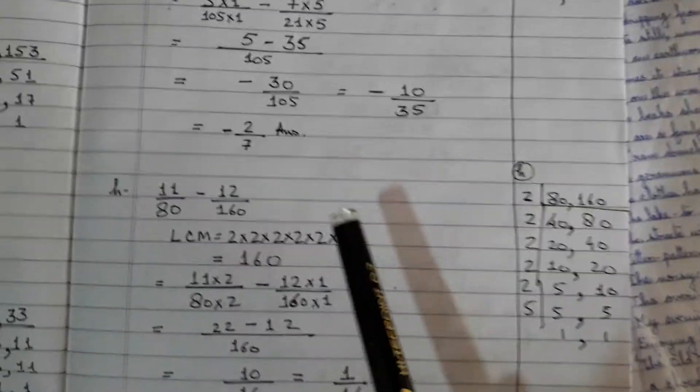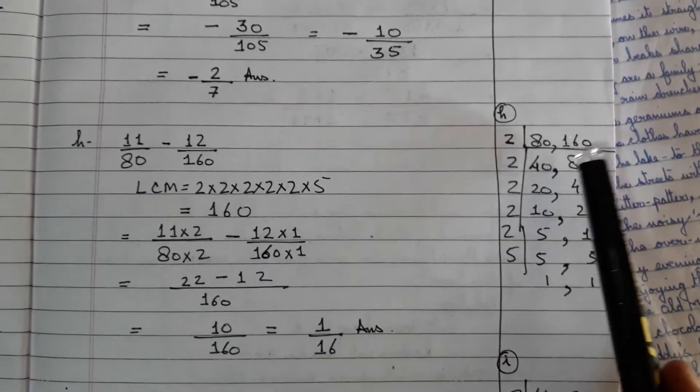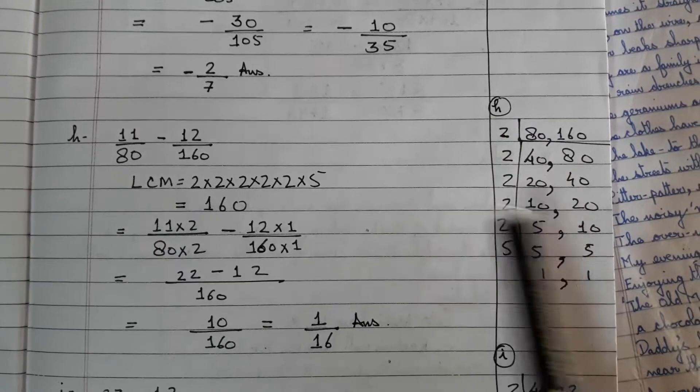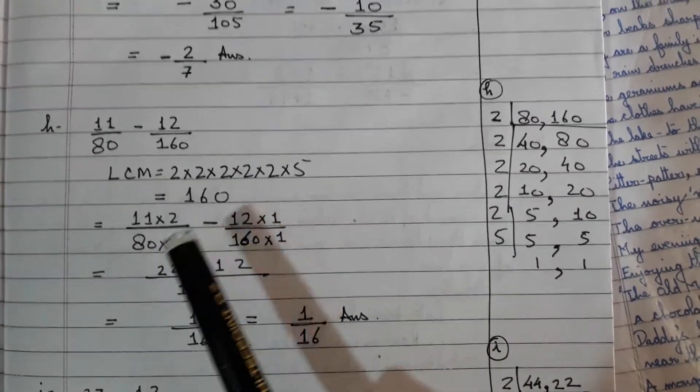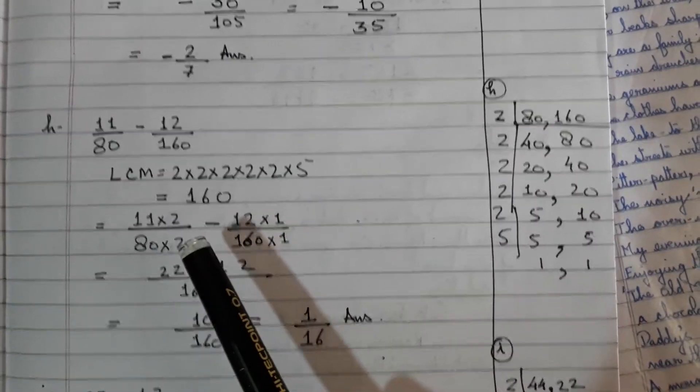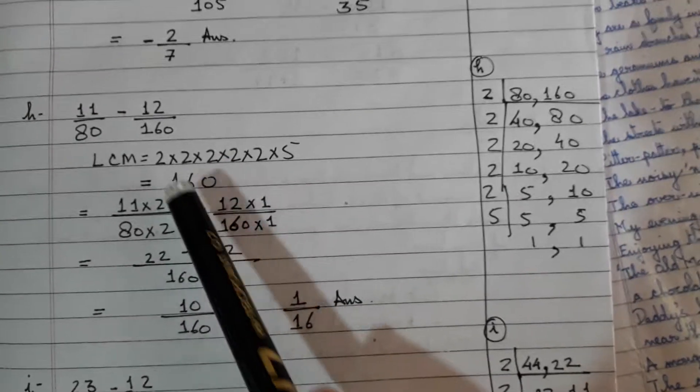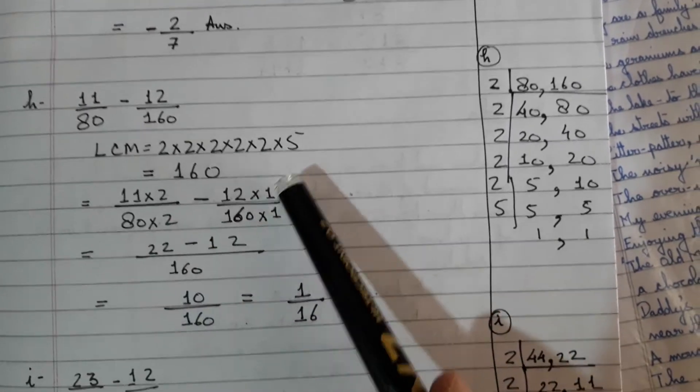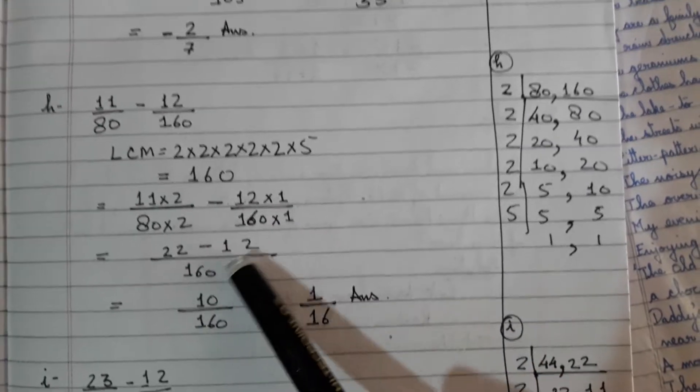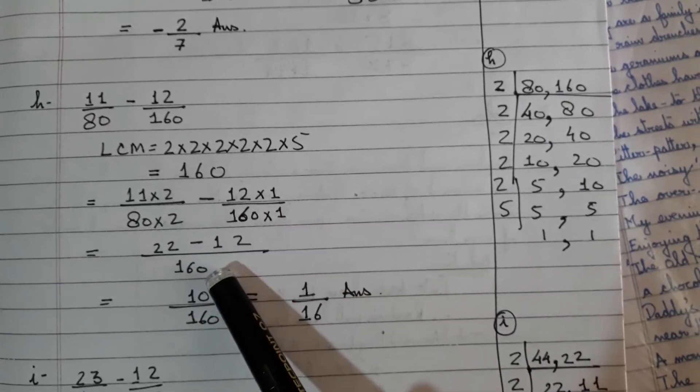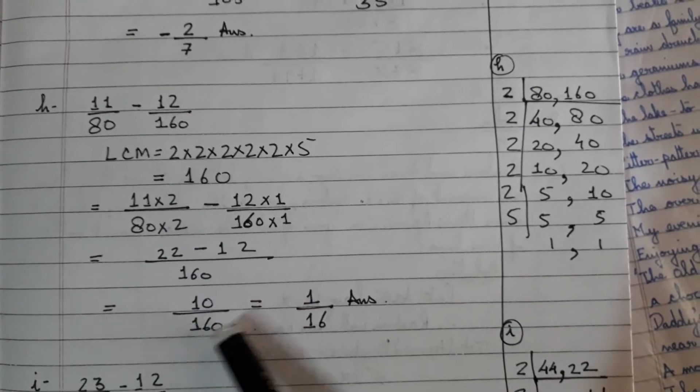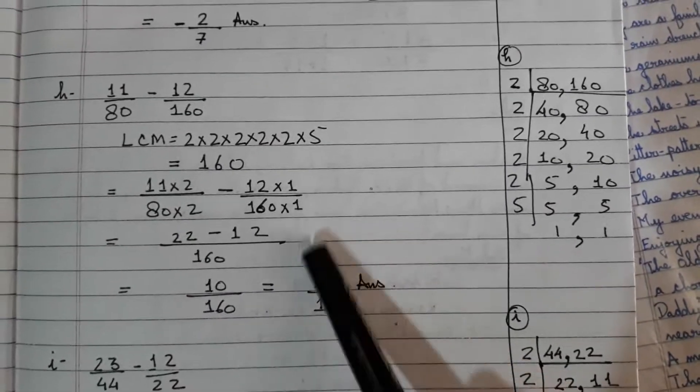Let us look at the other one. 11 over 80 minus 12 over 160. You keep on doing the LCM. The LCM will be 160. To make 160 out of 80, you multiply it by 2 and this will be multiplied by 1. So 11×2 is 22 and 12×1 is 12. 22 minus 12 over 160. 10 over 160, 1 over 16 will be your final answer.